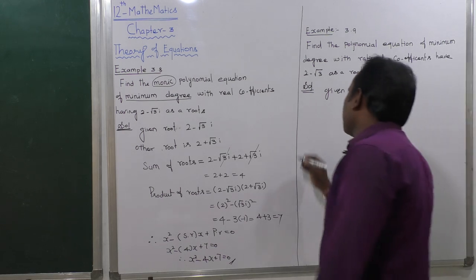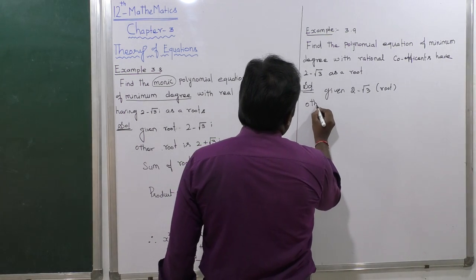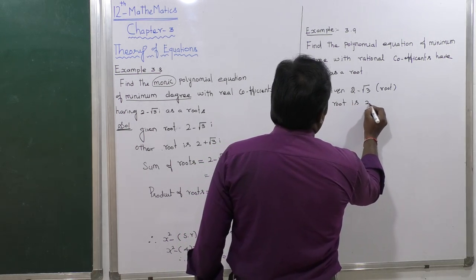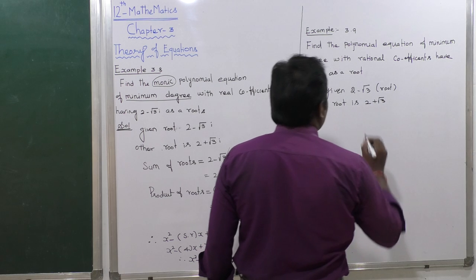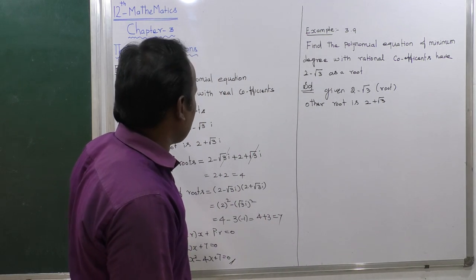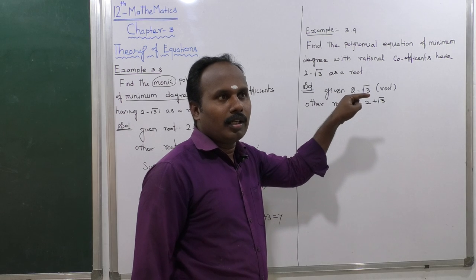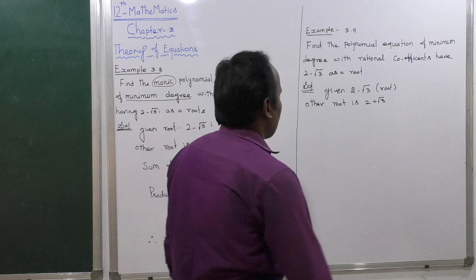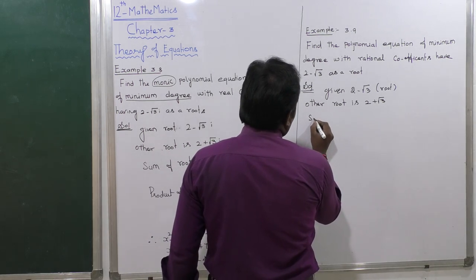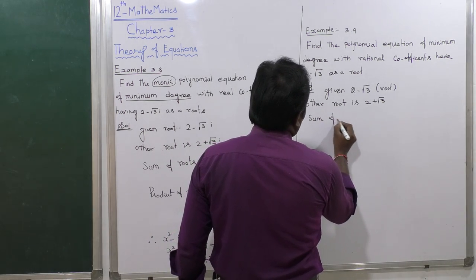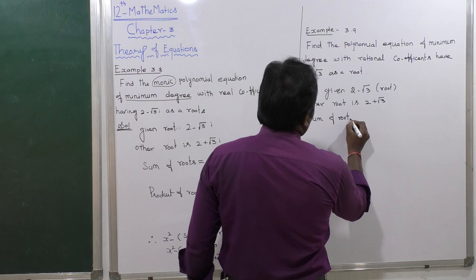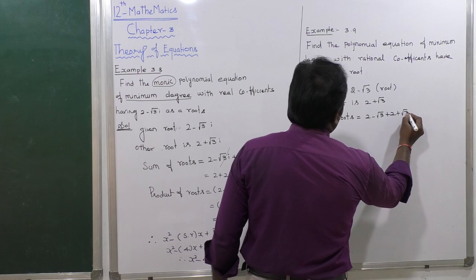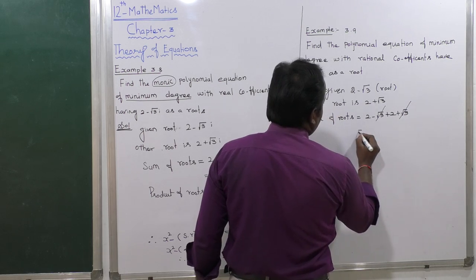Since the root is irrational, the other root is its conjugate: 2 plus root 3. The sum of roots equals (2 minus root 3) plus (2 plus root 3). The root 3 terms cancel, giving 2 plus 2, which equals 4. So the sum of the roots is 4.